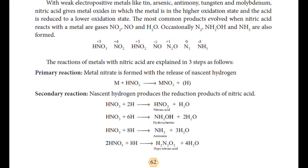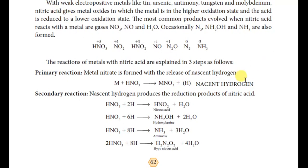The hydrogen produced is nascent hydrogen. This leads to the secondary reaction. In the secondary reaction, the nascent hydrogen reduces the nitric acid — these are the nitric acid reduction products. Nitric acid is reduced by the hydrogen.